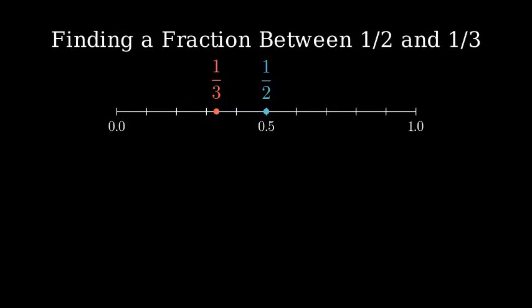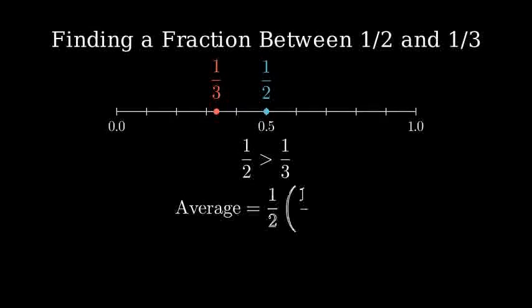We can see that one-half is greater than one-third on our number line. One way to find a number between them is to take their average.